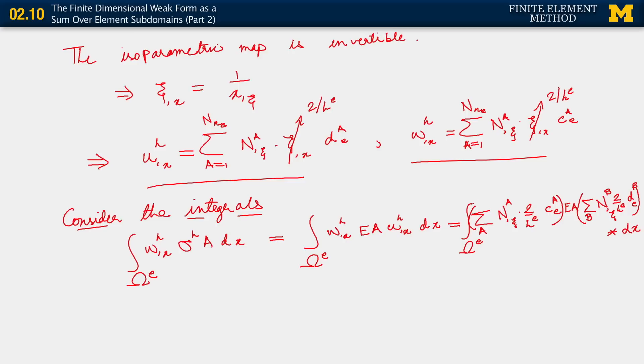The sum over b, N_b,ξ, 2 over h_e, d_b^e, close parentheses. And observe that I shouldn't forget the fact that I have a dx here. In writing this, this first set of parentheses is my representation for w_h,x. The second set of parentheses give me u_h,x. All right?